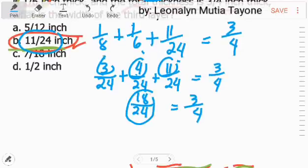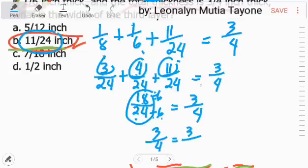So 18 over 24, let's simplify that by finding the greatest common factor to divide. The greatest common factor is 6. So divide by 6. 18 divided by 6 equals 3. 24 divided by 6 equals 3 fourth. So our answer of 11 over 24 is correct because it's equal.